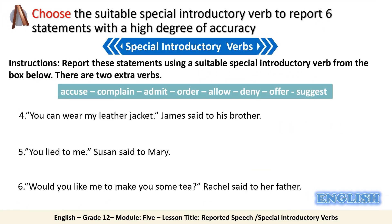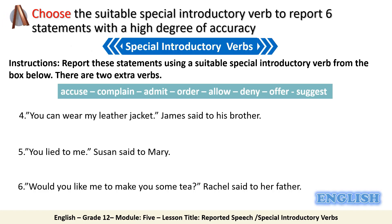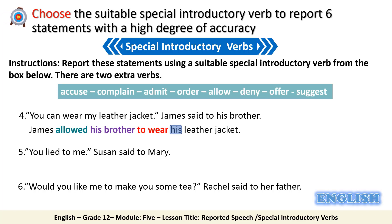Continuing with sentences four, five, and six. Sentence four uses 'allow': 'James allowed his brother to wear his leather jacket.' Use the indirect object 'his brother' after 'allowed,' the infinitive form, and change 'your' to 'his.' Sentence five uses 'accuse': 'Susan accused Mary of lying to her,' using the indirect object 'Mary,' the preposition 'of,' the -ing form, and changing 'you' to 'her.'